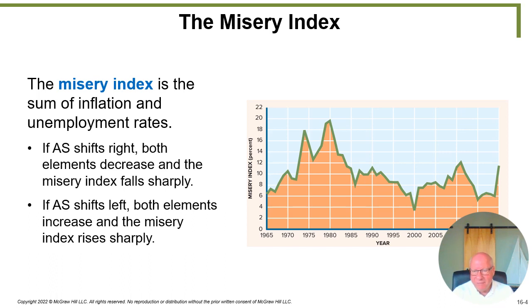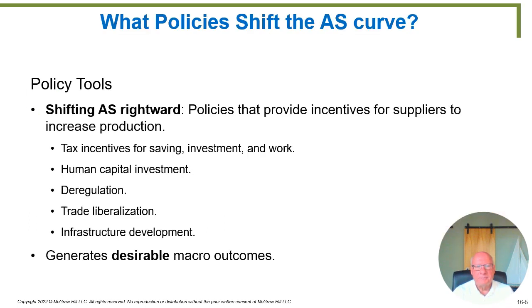If the aggregate supply curve shifts to the left, that drives up the misery index. If it shifts to the right, it drives down the misery index. Now let's talk about some policy tools — what can we actually do to shift the aggregate supply curve? We've been talking in theoretical generalities; let's get down to brass tacks. We have to provide some kind of incentive for suppliers of resources to increase their production.